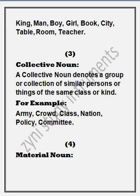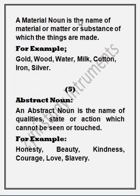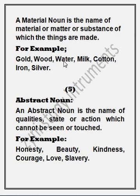The fourth is material noun. A material noun is the name of material, matter, or substance of which things are made. Material noun ایسا مواد ہے، ایسی چیزیں ہیں جو چیزوں کو تیار کرتی ہیں — یعنی چیزوں کو بنانے کے لیے استعمال ہوتی ہیں. For example: gold, wood, water, milk, cotton, iron, silver — یہ ساری ایسی چیزیں ہیں جو باقی چیزوں کے وجود کے لیے استعمال ہوتی ہیں.